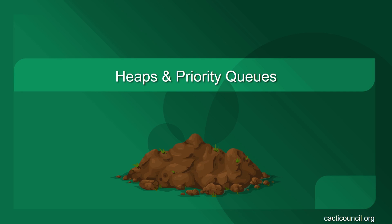A heap is a semi-ordered data structure that is very efficient for implementing another particularly useful data structure, a priority queue. Most of this lesson will be spent on how to implement a heap, and after that, making a priority queue will be easy to do.